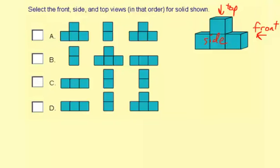So the front view, if you're looking from over here, looking at it, you're going to see this square. And then you're going to see this square here. So you're going to see two squares, one on top of the other. So it would look like this.